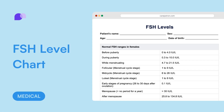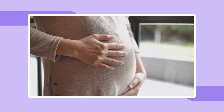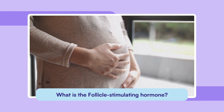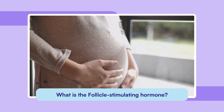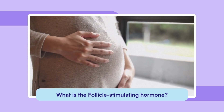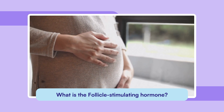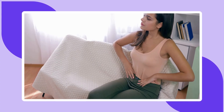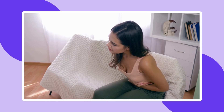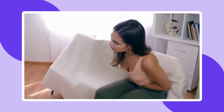Follicle Stimulating Hormone or FSH plays a key role in the development of the reproductive system. It's used a lot in both diagnosing and treating conditions related to reproductive health. An FSH levels chart is a handy tool that shows the normal range of FSH levels at different stages of life and throughout the menstrual cycle.